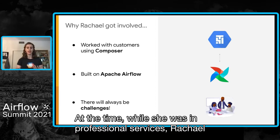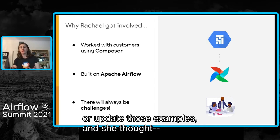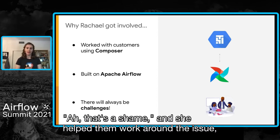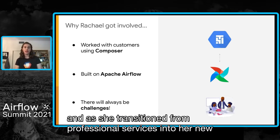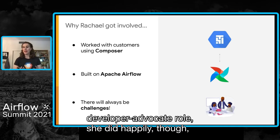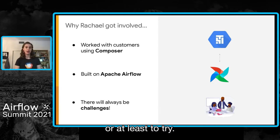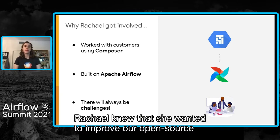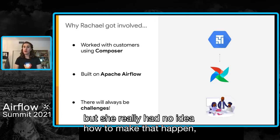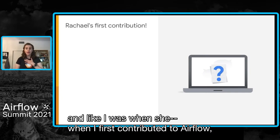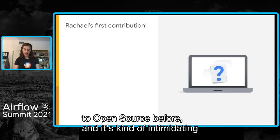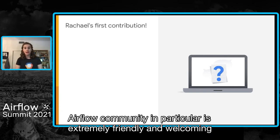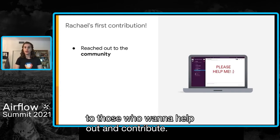At the time, while she was in professional services, Rachel kind of always reasoned that she didn't have the time to fix or update those examples. In her own words: 'Ah, that's a shame.' She helped them work around the issue. But as she transitioned from professional services into her new developer advocate role, she finally found the time and opportunity to help address some of those challenges — or at least to try. So where did she start? Rachel knew she wanted to improve the open source documentation and some of the example DAGs, but she really had no idea how to make that happen. Like me when I first contributed to Airflow, Rachel was a little hesitant because she'd never contributed to open source before, and it's kind of intimidating for the first time. One thing Rachel and I both learned quickly though is that the Airflow community in particular is extremely friendly and welcoming to those who want to help out and contribute.